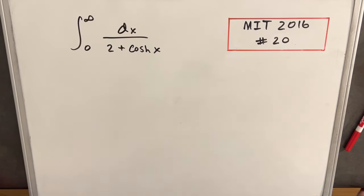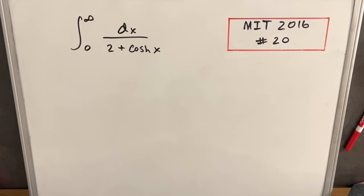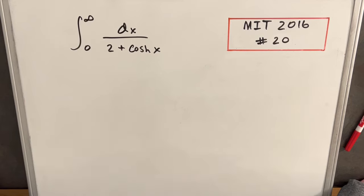We have another integral on the board here from MIT Integration 2016. Problem number 20: the integral from 0 to infinity of dx over 2 plus cosh x, or hyperbolic cosine. I really don't know if this is the best way to do this, but I wanted to use this as an excuse to solve this using Weierstrass substitution.